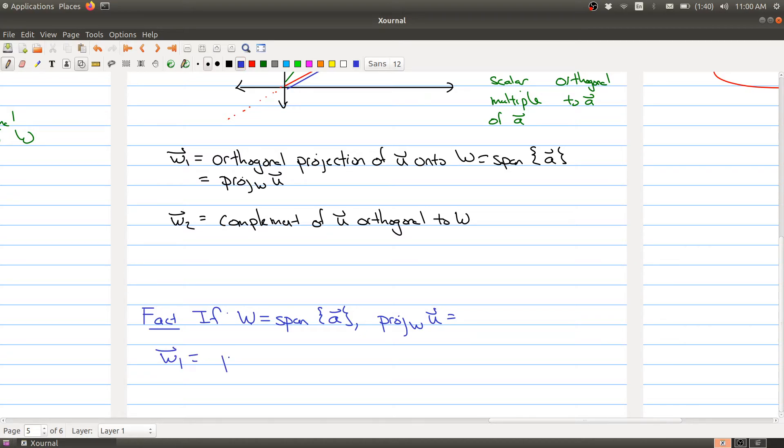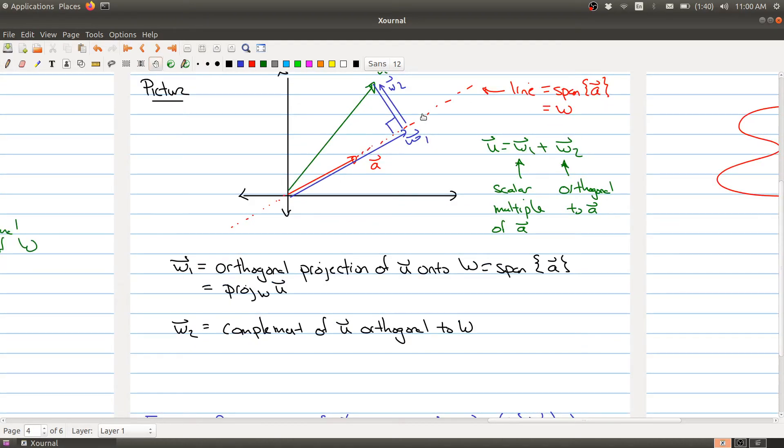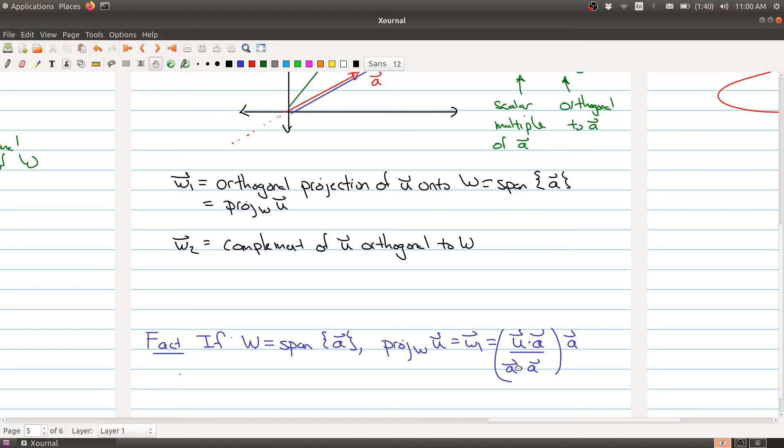We can write it like this: w1, which is by definition the projection, is defined to be u dotted with a over a dotted with a, times the vector a. And this makes sense. It should be a scalar multiple of a because this vector should be on this line. And the question is what is the scalar, and the scalar is given by this form right here.